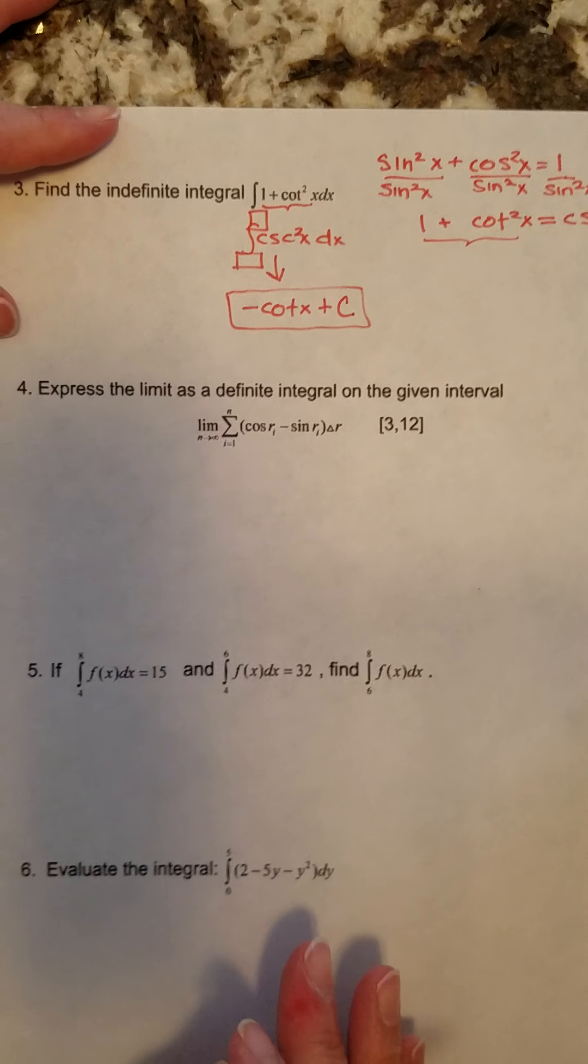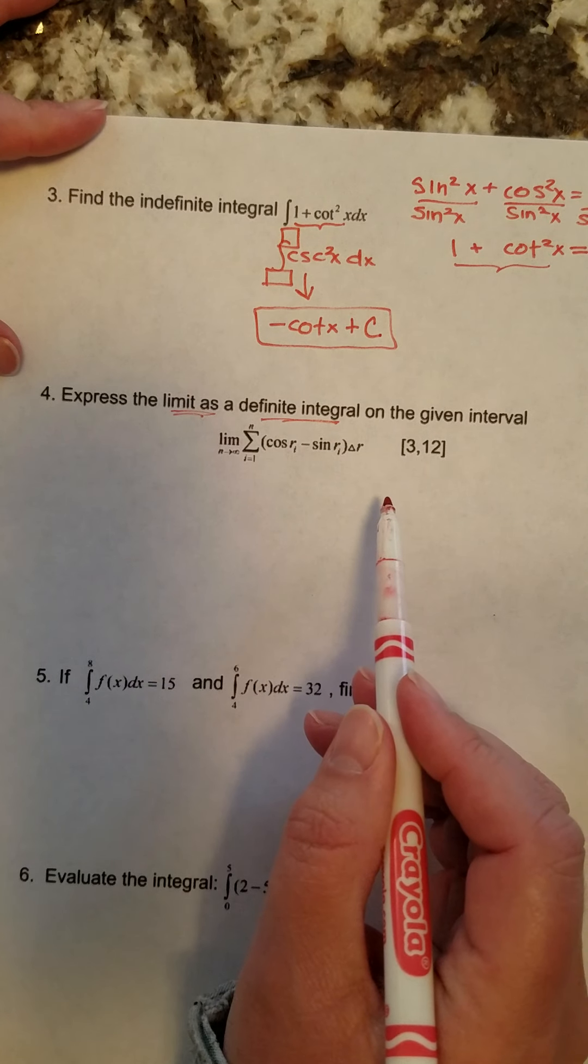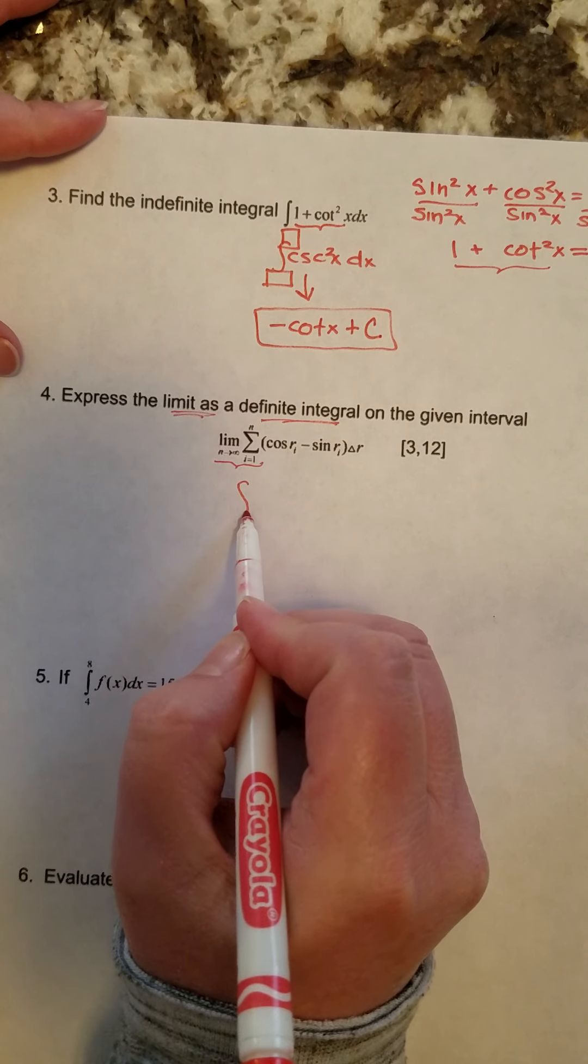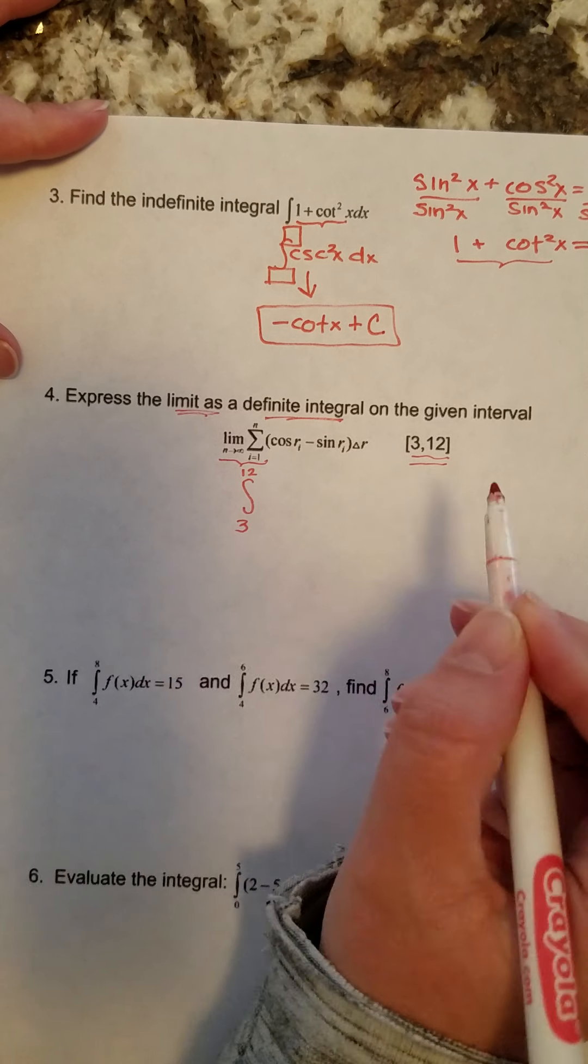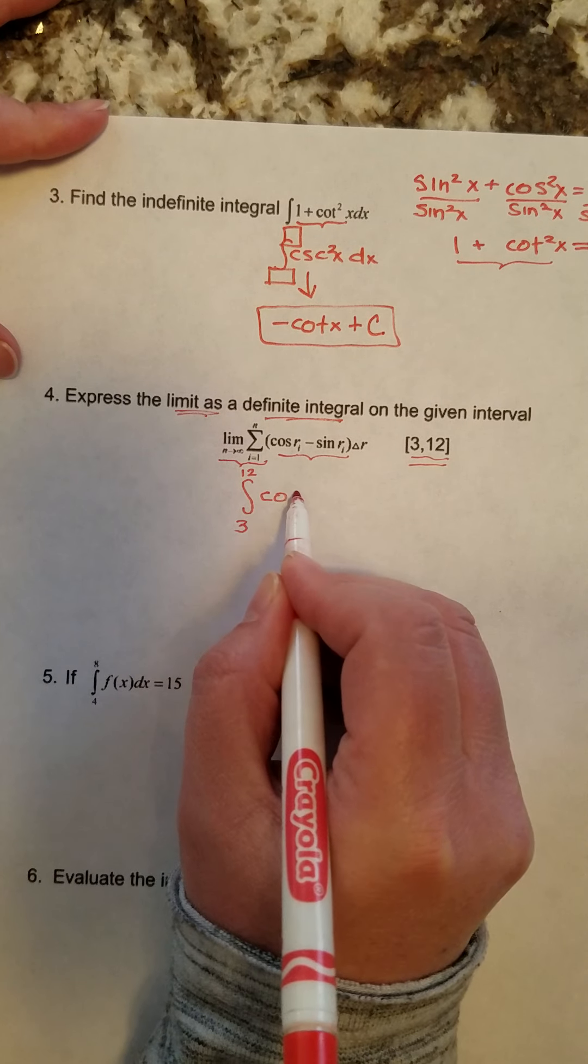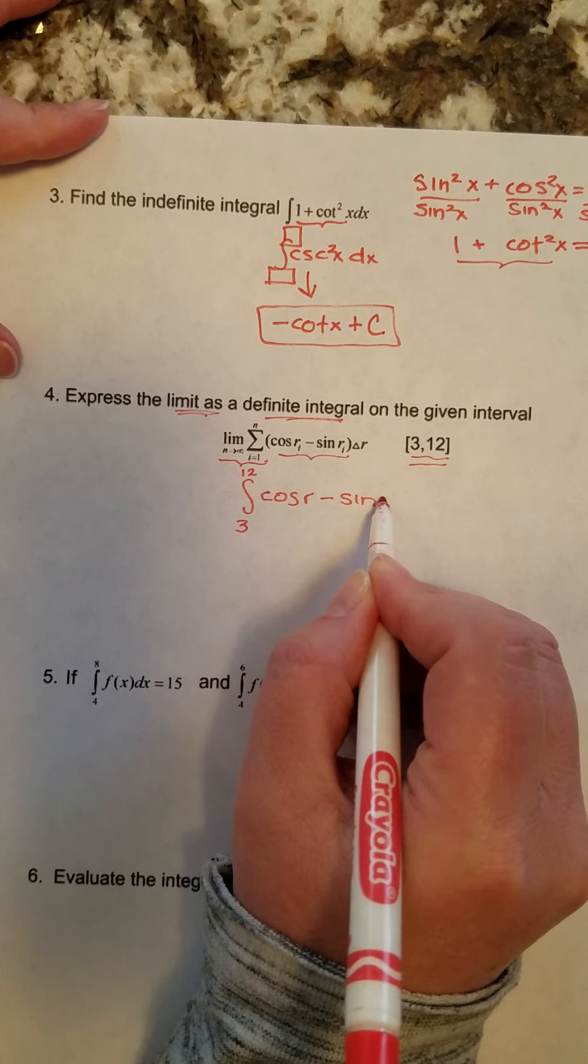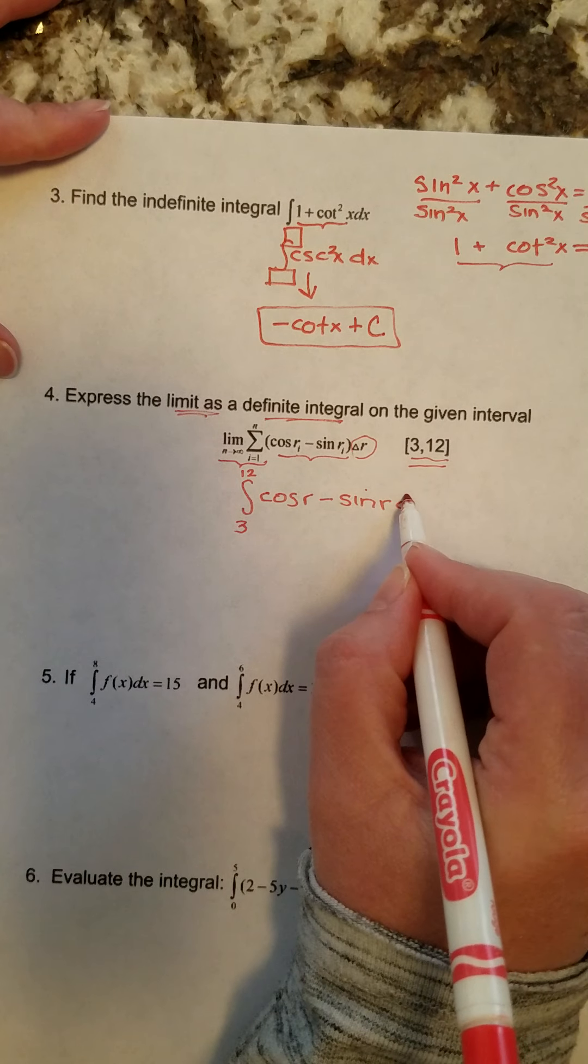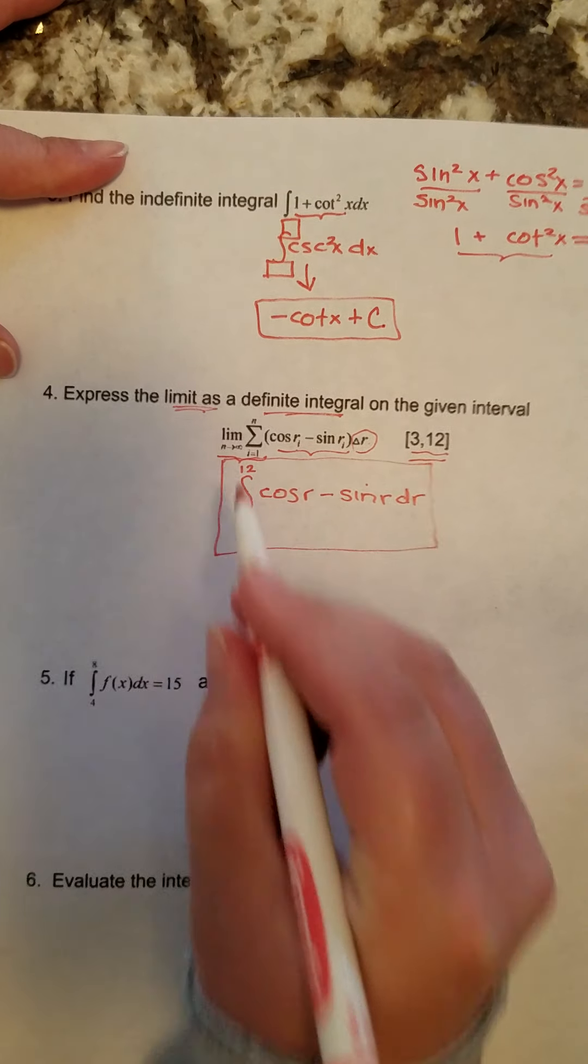This one here says express the limit as a definite integral. So this is kind of the opposite of what question number one was asking. That means in place of all this stuff here, we could replace it with an integral. The interval from 3 to 12 gives us our a and our b value. I can take this and in place of the r's, just put an x or really whatever letter you want. Cosine of r, cosine of x, however you want to do it. I'll just say r since they use an r, minus sine of r. But I can drop the subscripts that I have right there. And then in place of the change of r, I put my dr. And that's it for that problem. There is no other work you have to do for that one right there.